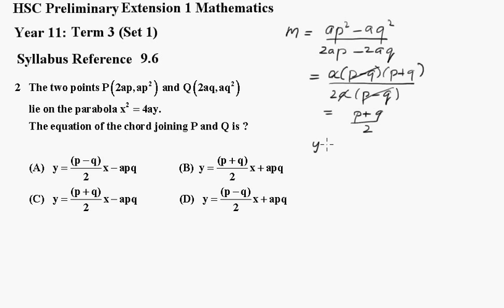Using y - y₁ formula, we'll have y - ap² equals gradient (p + q)/2 outside of x - 2ap.